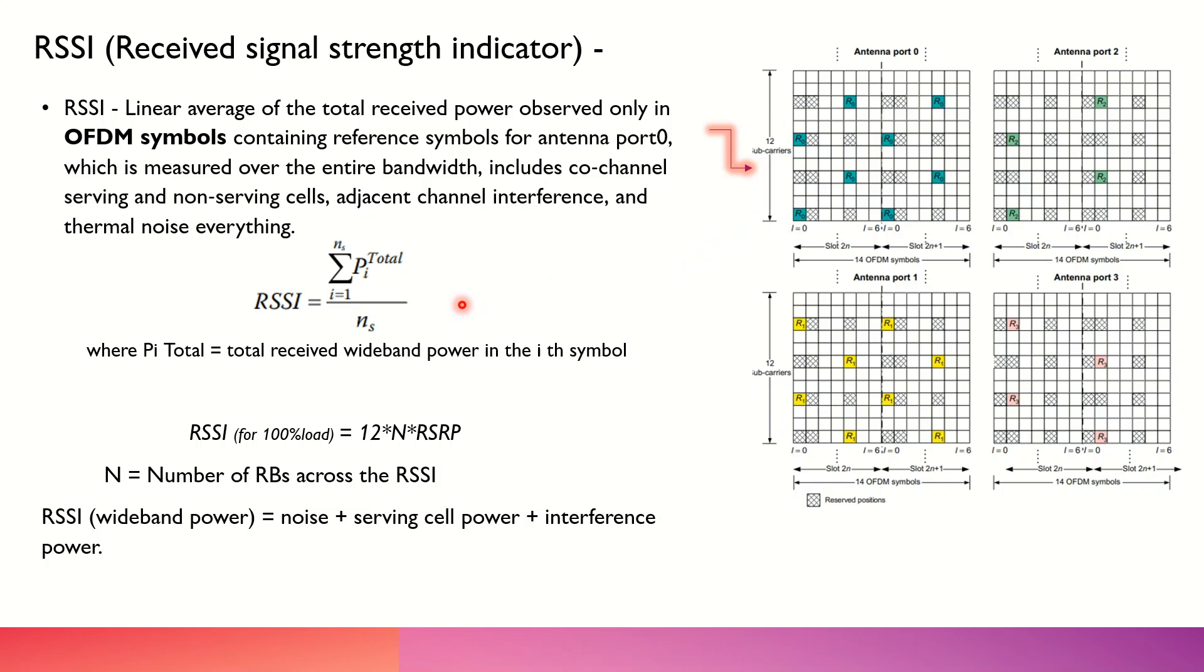So RSSI in case of 100% loading, means what is the overall received signal strength. It would be all the resource elements that are being catered by a particular OFDM symbol which is carrying the reference signals, all the power across these different resource blocks and subcarriers will be considered as RSSI. So RSSI, in a nutshell, is the noise which is coming from the neighboring cells plus the serving cell power, because we are considering the RSRP in this case also, which is included because we are considering the power for the reference signals, and we have some interference which is coming.